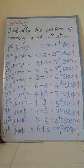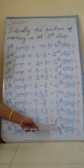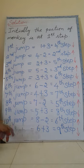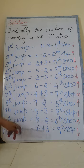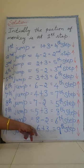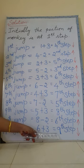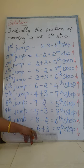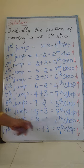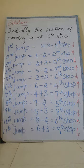Finally, the eleventh jump. The tenth jump of the monkey is the sixth step. Six plus three equals the ninth step. The monkey reaches the ninth step — he is at the water level. So this sum is finished. The eleventh jump of the monkey reaches the level of the ninth step, which is the water level.